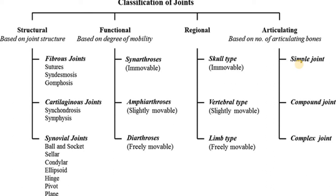Simple joints have two articular surfaces — one concave and one convex — such as the shoulder joint and interphalangeal joint. Compound joints have two or more articulating surfaces, such as the elbow joint where the humerus articulates with both the radius and ulna. Complex joints contain articular discs and menisci, such as the sternoclavicular joint, acromioclavicular joint, and knee joint.